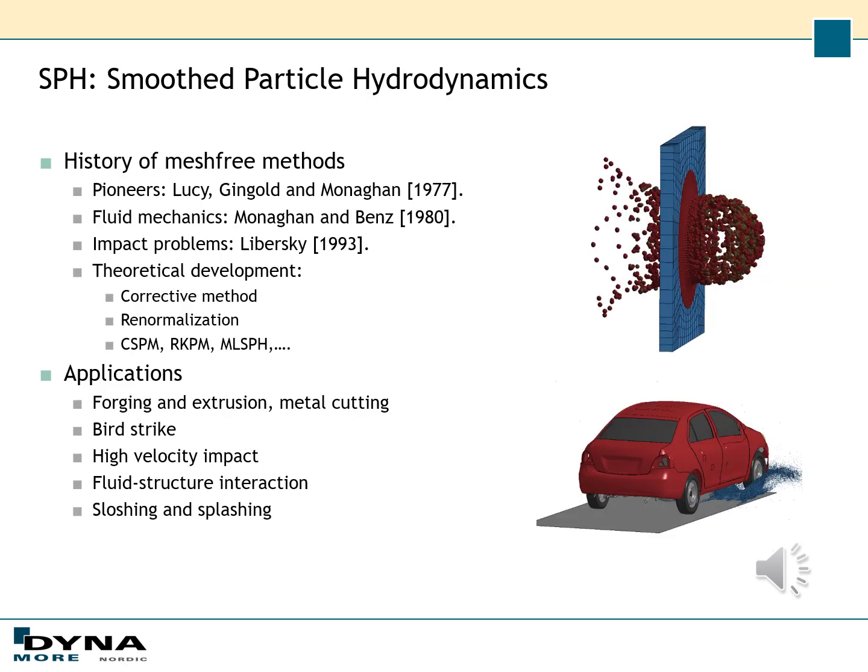The history of mesh-free methods started with some pioneering works in the late 1970s and during the 1980s. Then there has been quite much theoretical development aiming at improving accuracy and stability of the method. Today SPH can be applied to a number of different areas such as forging, extrusion and metal cutting, impact problems like bird strike and high velocity impact, and also fluid structure interaction problems and splashing and sloshing.